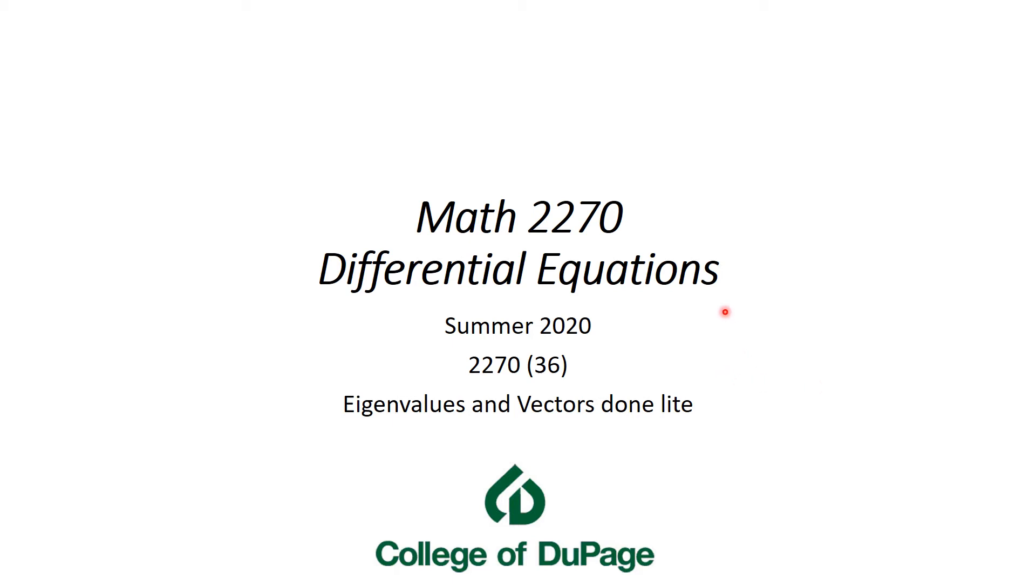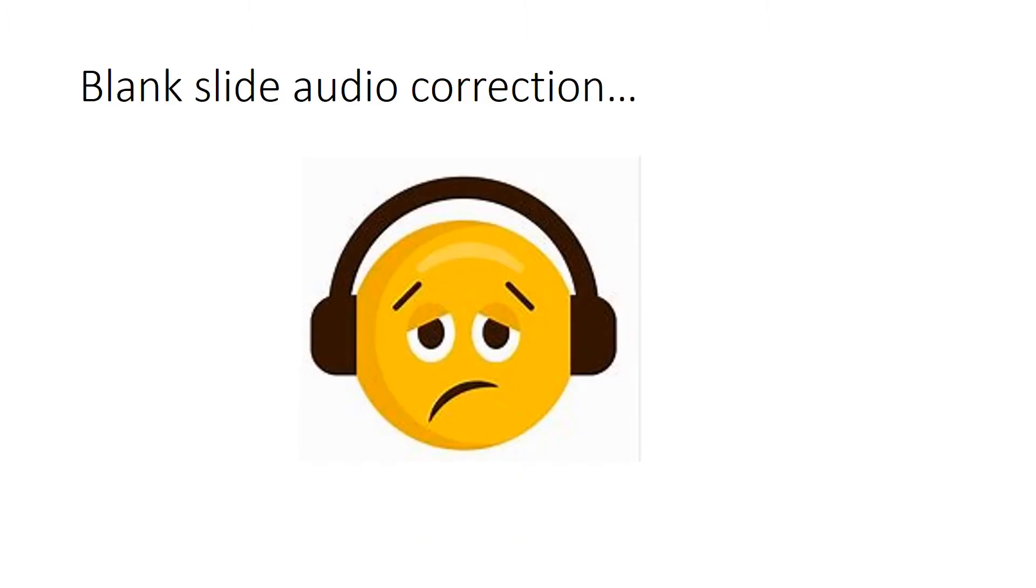Hello, this is Math 2270 coming to you from the College of DuPage during the summer of 2020, and the title of this lecture is Eigenvalues and Vectors Done Light.